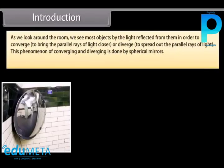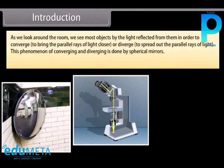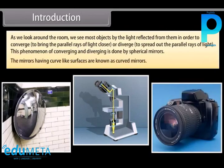As we look around the room, we see most objects by the light reflected from them. In order to converge — to bring the parallel rays of light closer — or diverge — to spread out the parallel rays of light. This phenomenon of converging and diverging is done by spherical mirrors. The mirrors having curve-like surfaces are known as curved mirrors.